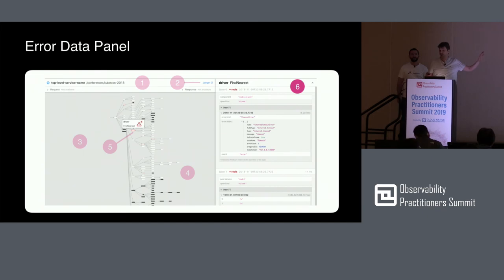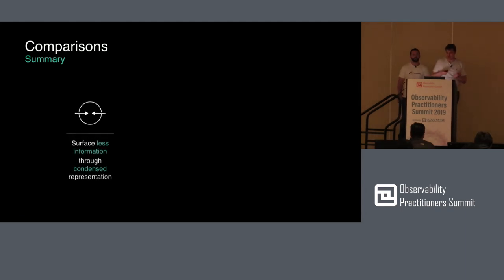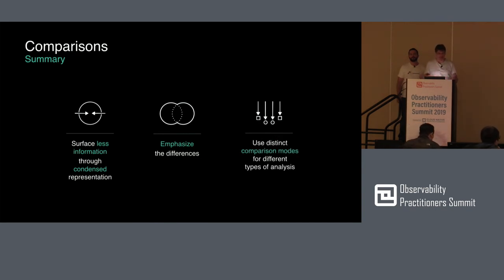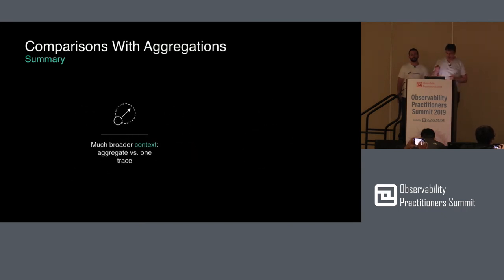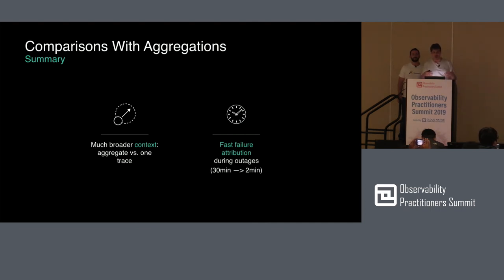You can actually run machine learning on these diffs afterwards. In summary, visual comparisons are a very useful tool for making distributed tracing information actionable. They surface much less information by condensing it and emphasize differences rather than showing the whole picture. When comparing with aggregations, we rule out outliers. This tool was specifically built to attribute failures much quicker — it used to take operations 30 minutes to figure out which service was misbehaving. Now they're down to two minutes with this tool.